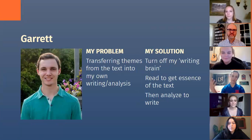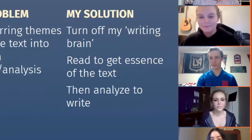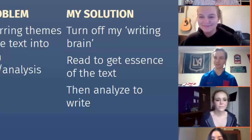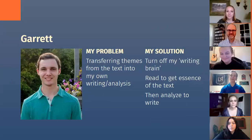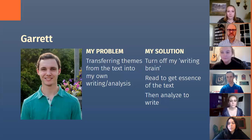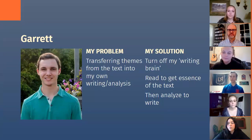Hi, everyone. I'm Garrett. My problem is transferring themes from the text into my own writing and analysis — and that's kind of a big problem when a lot of the assignments require you to read something and put it into your own words and your own ideas. My solution: first, I turn off what I like to call my writing brain — the thought process I use when formulating my own ideas — because you can't be thinking about what you're going to write about a piece before you've actually read it. It's just impossible. It doesn't make any sense.